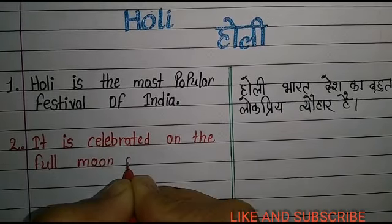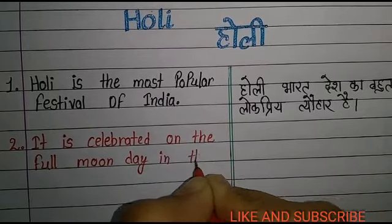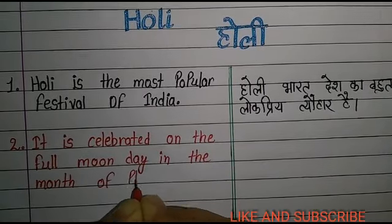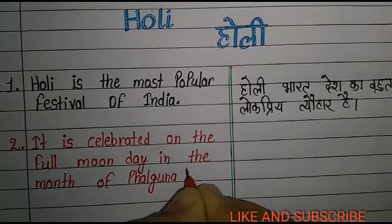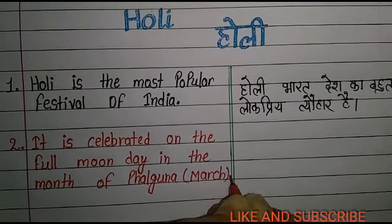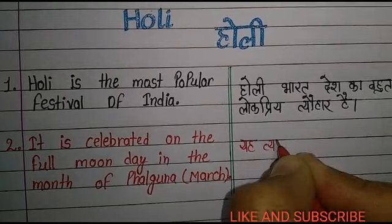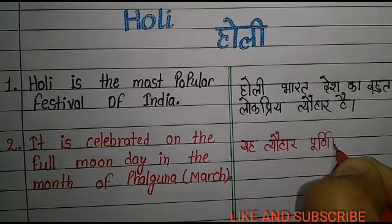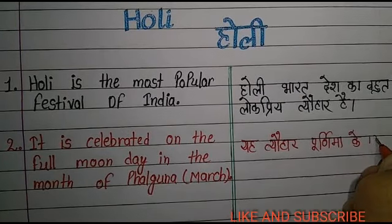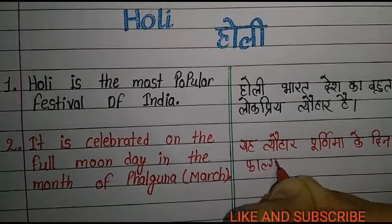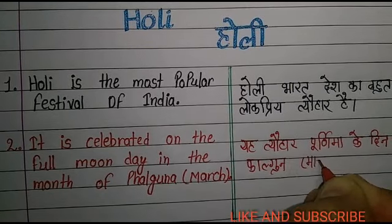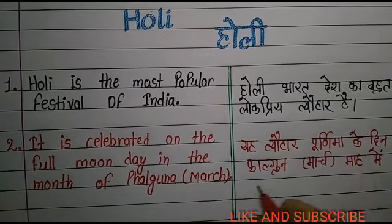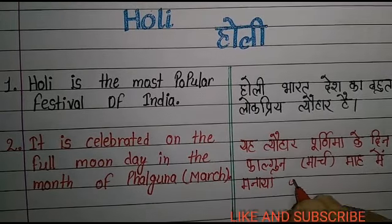Second line: It is celebrated on the full moon day in the month of Falgun, March. यह त्योहार पूर्णिमा के दिन फाल्गुन मार्च माह में मनाया जाता है।